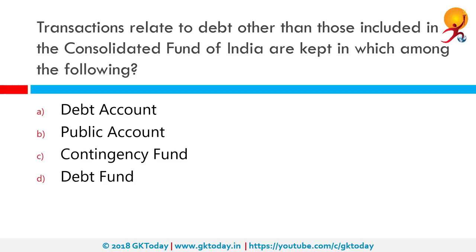Transactions related to debt other than those included in the Consolidated Fund of India are kept in which among the following? The correct answer is Public Account. The public account is constituted under Article 266 of the Constitution. All other public monies not covered under the Consolidated Fund of India, received by or on behalf of the Government of India, are credited to the Public Account of India.